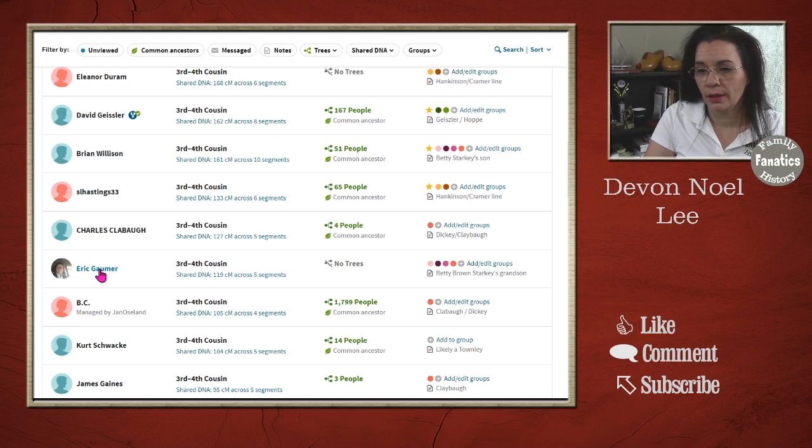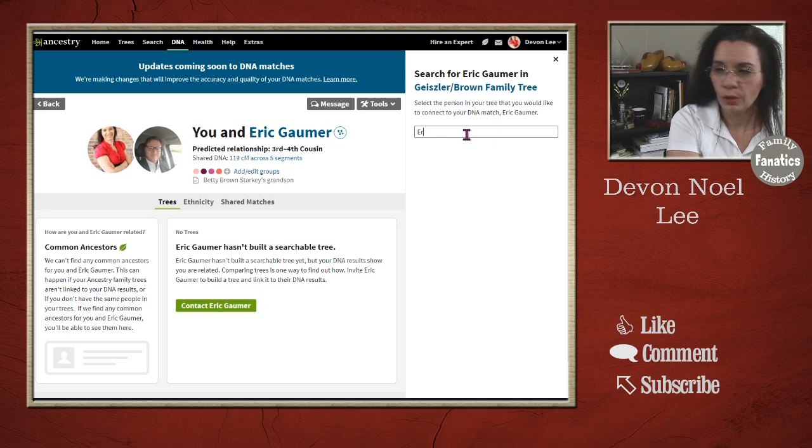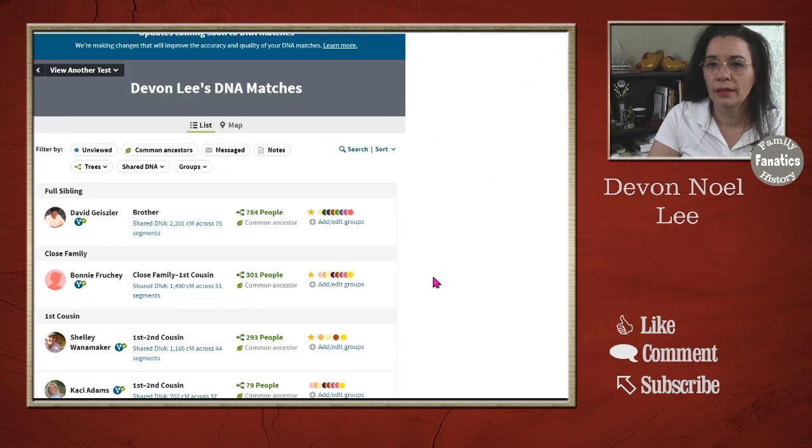So we're going to click on their name, and we're going to click on that icon. And once again, we're going to start typing their name. And there they are. And we can go back and forth between their tree, and he has the icon updated.